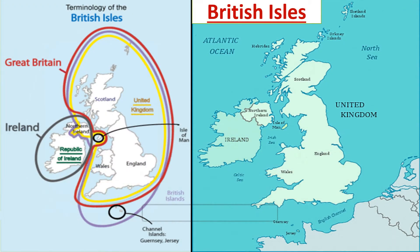British Isles is made up of 5,000 islands, of which Great Britain and Ireland are the biggest ones. It is made up of two main independent countries: the UK and the Republic of Ireland.